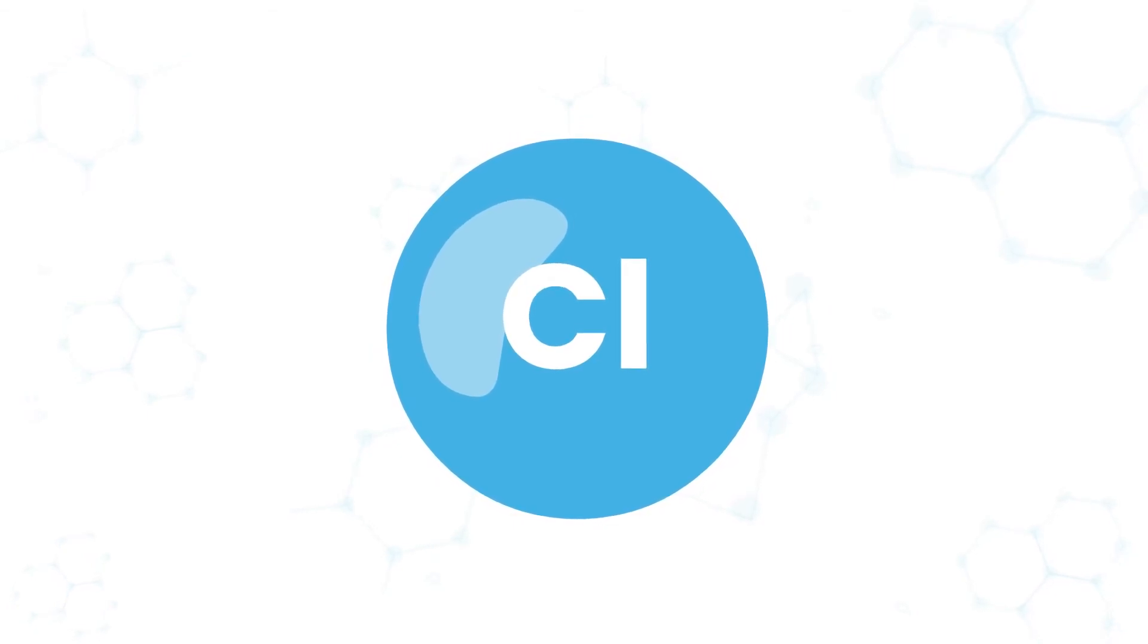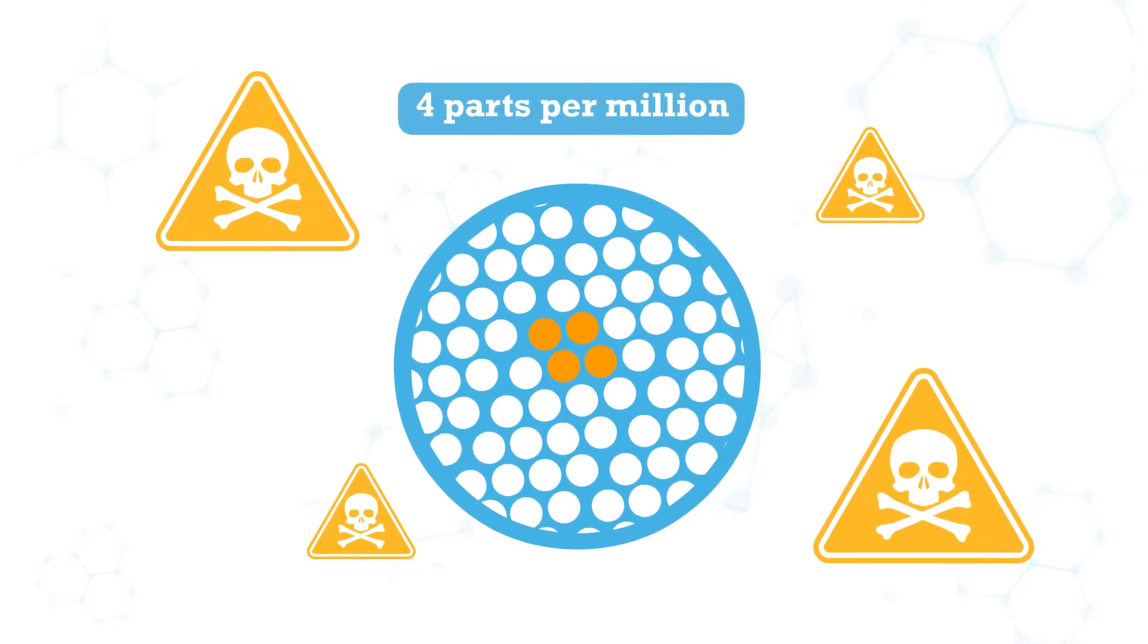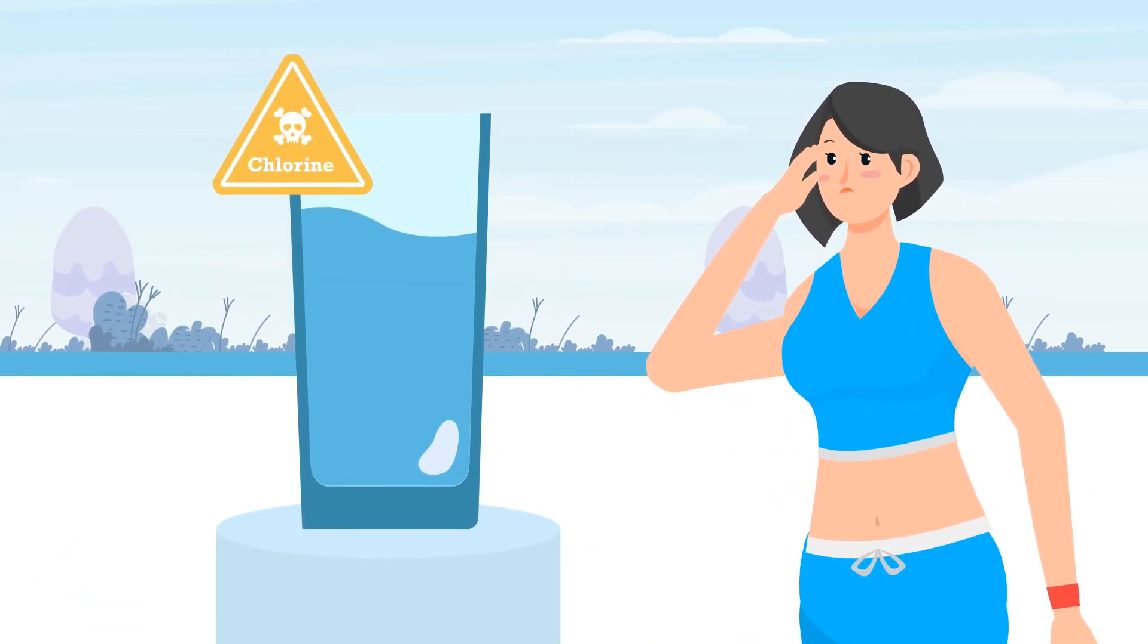The chemical chlorine starts to become toxic to humans at just 4 parts per million. It doesn't take very much at all, does it?